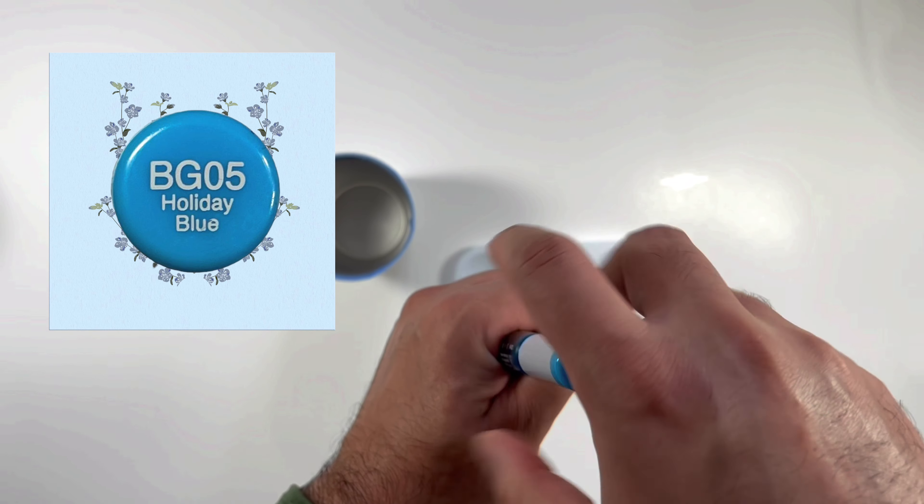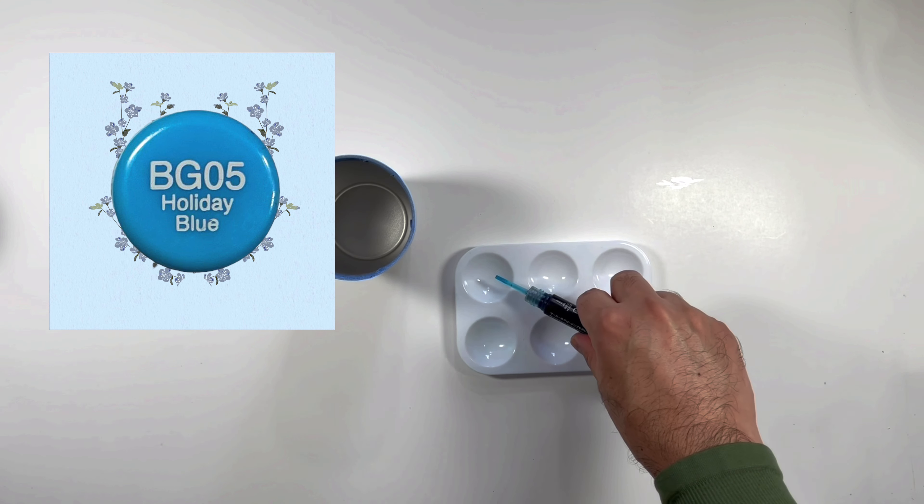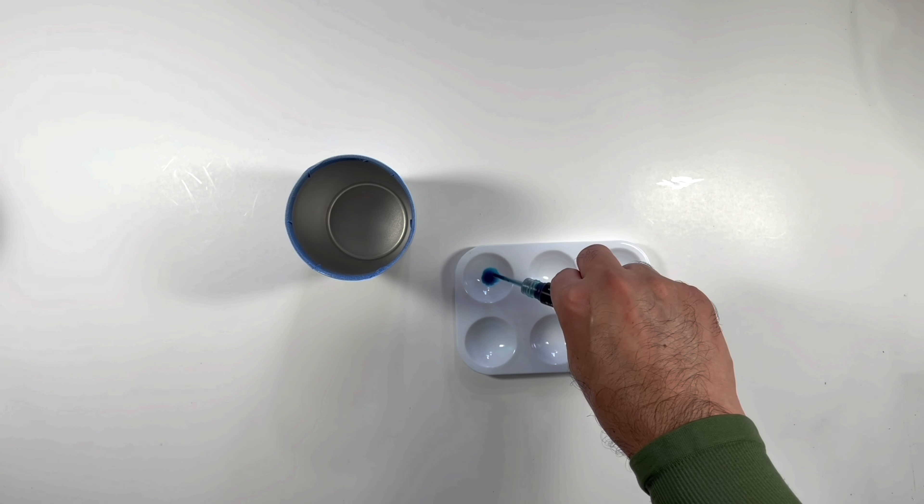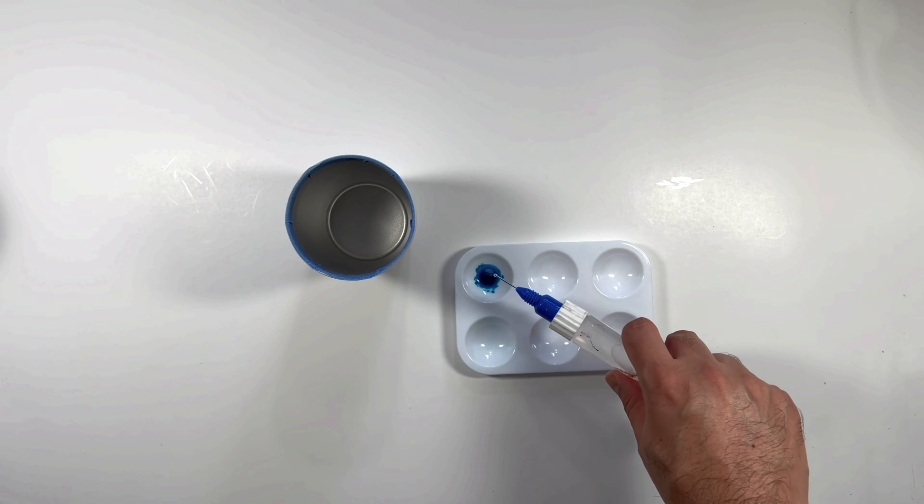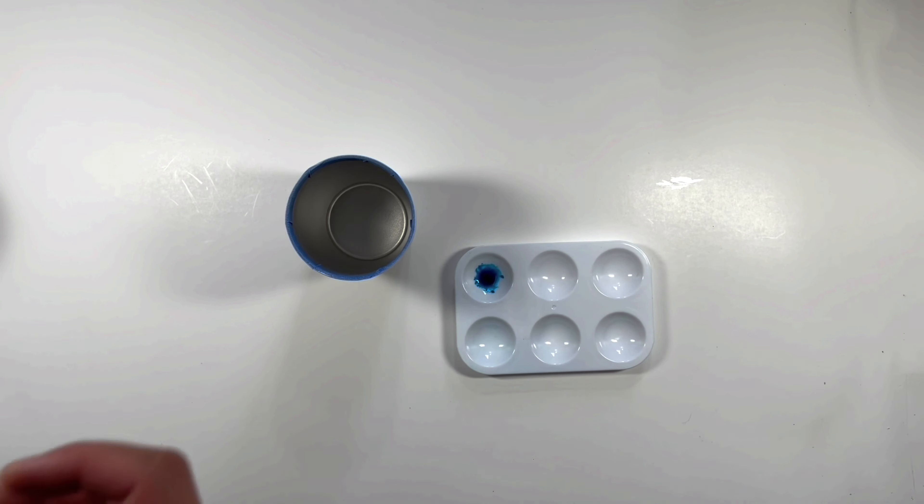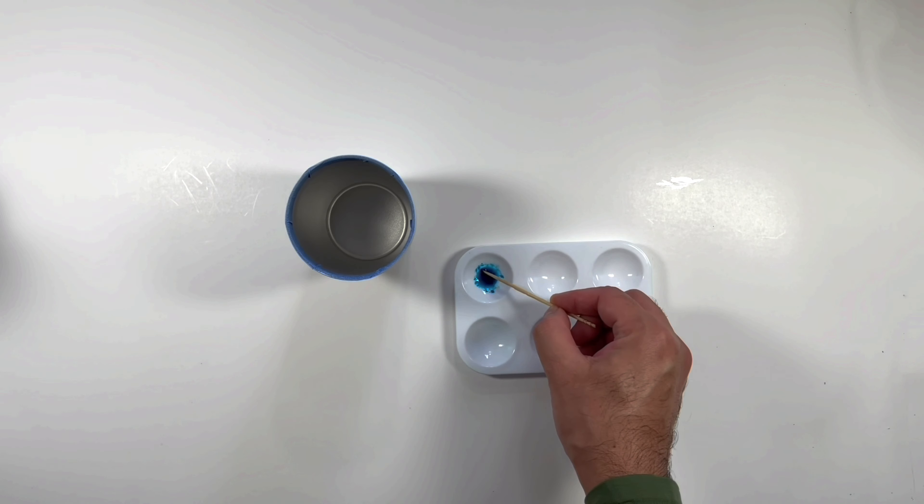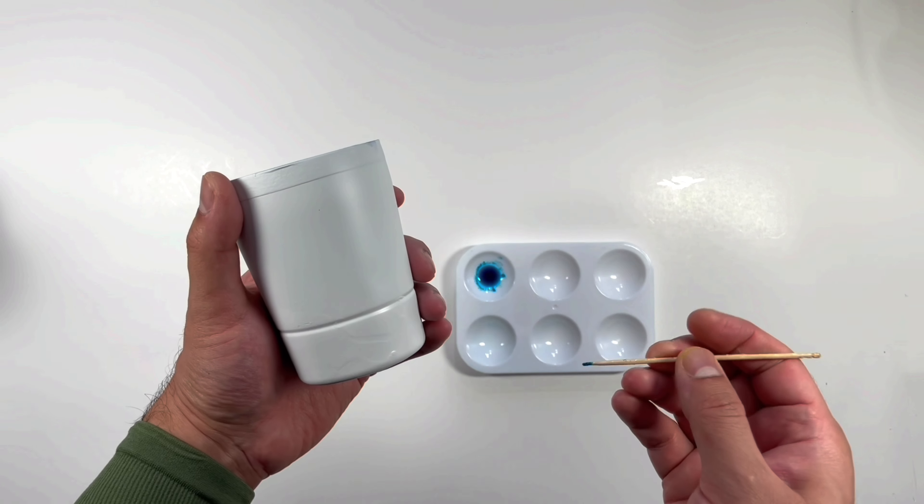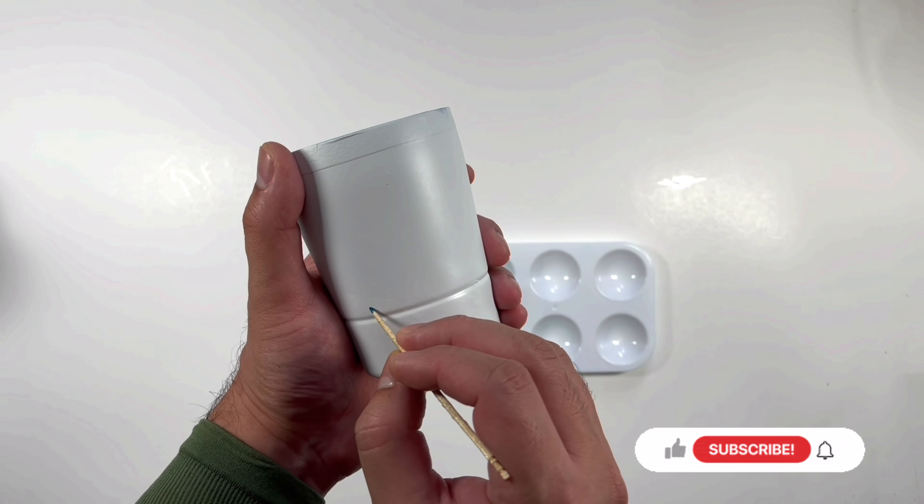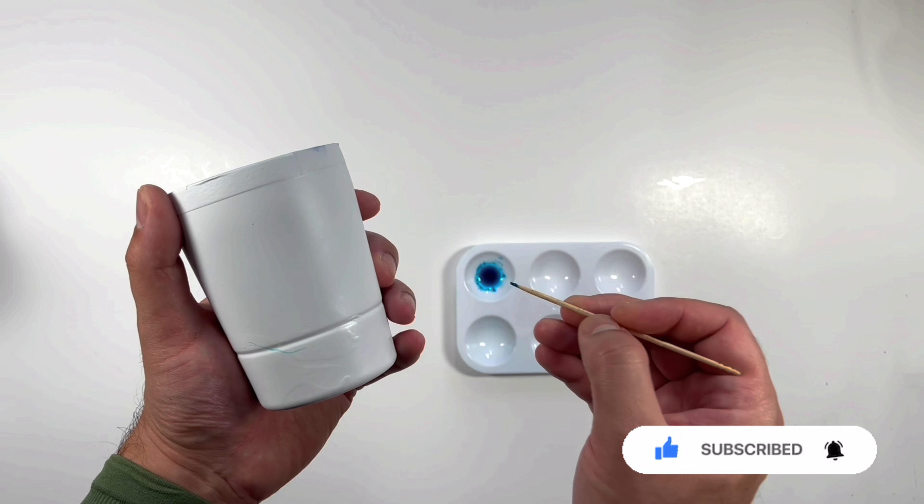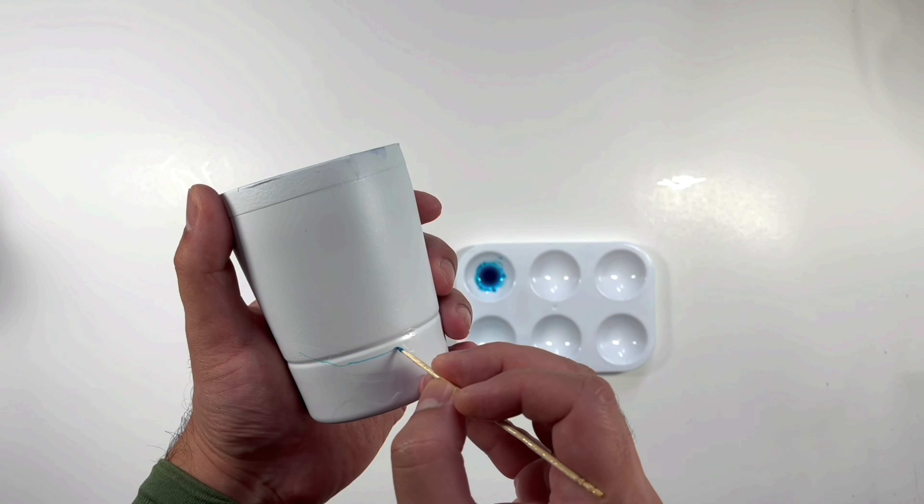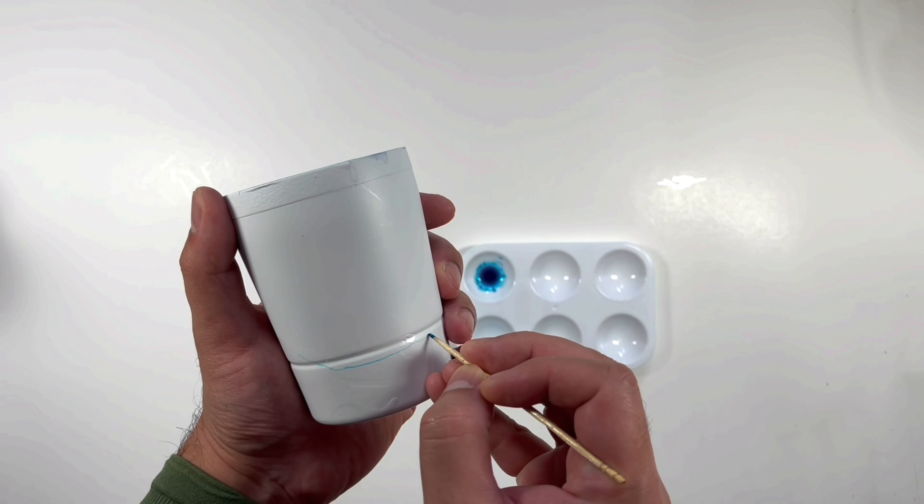This is our first color, the holiday blue. Just add a couple of drops in your paint tray and add a couple of drops of isopropyl alcohol. Mix them and with the help of the resin coated toothpick draw an outline.